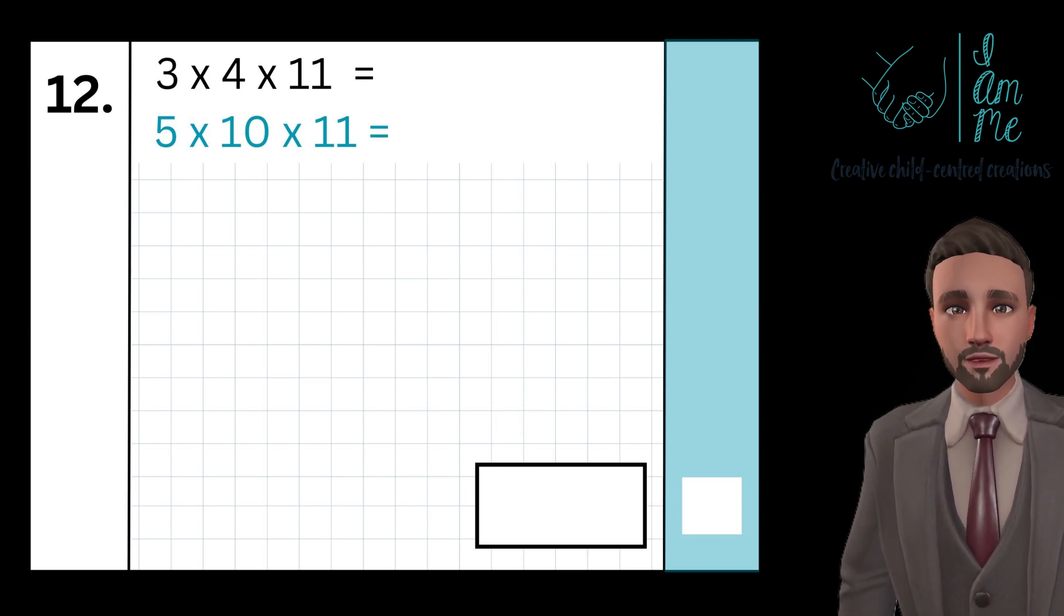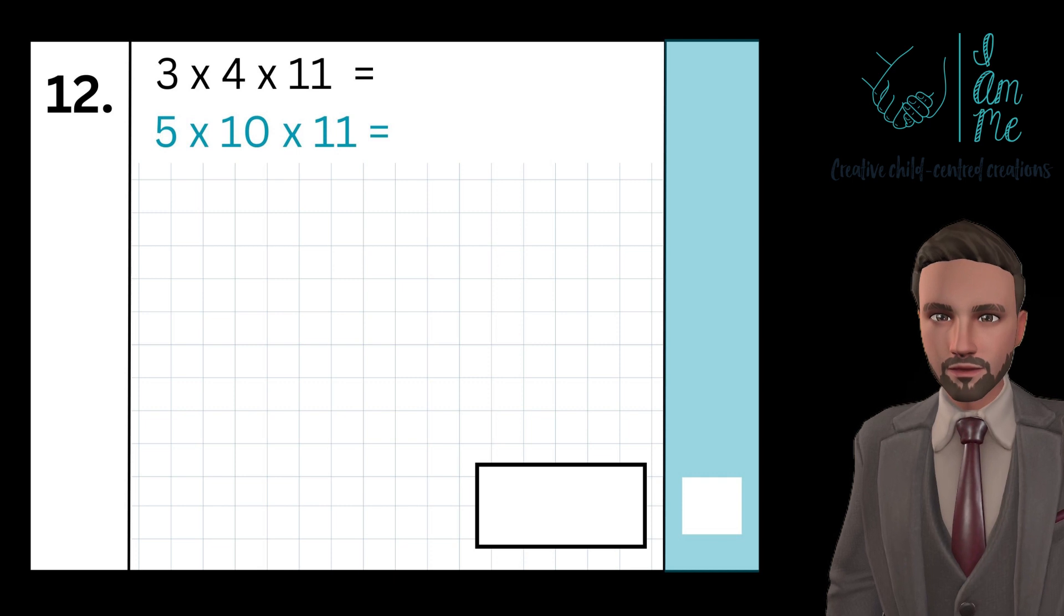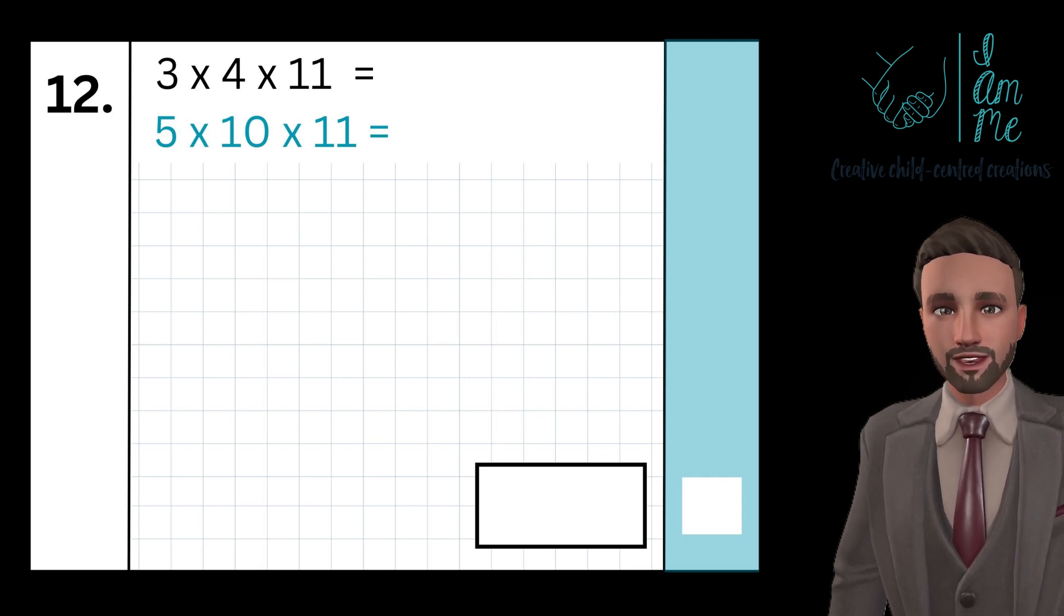First you need to check that all the operations are the same. In SATs there will be an order of operations question and you don't want to mix these two up. Once you've spotted that all the operations are the same, you simply work left to right.